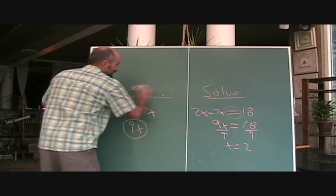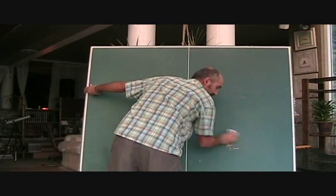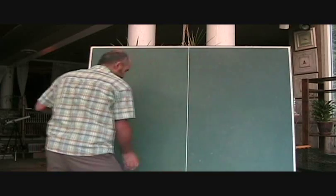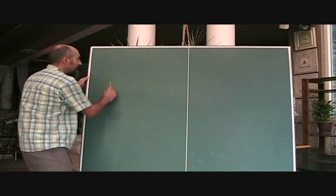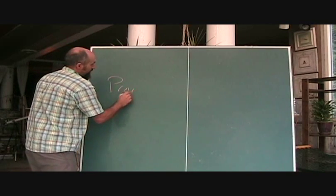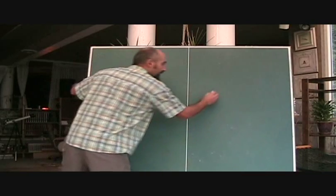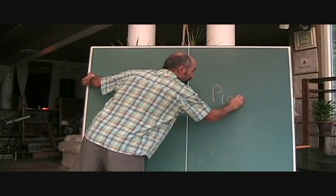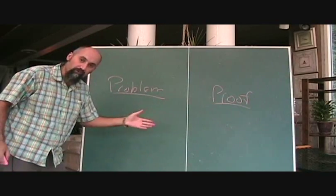So what we have here is if they ask you, there's two different ways they can ask you problems. One of them is just simply asking you a problem, and the other one is asking you to prove a certain relationship or a certain problem.